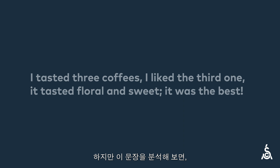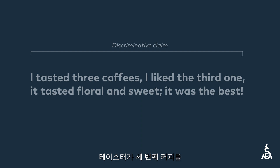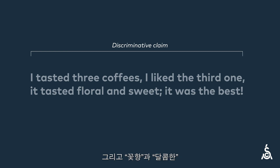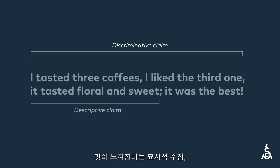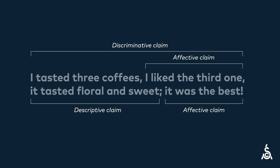If you analyze the sentence, however, you can see it contains all three kinds of information: a discriminative claim that the taster can distinguish the third coffee from the others, a descriptive claim that it tastes floral and sweet, and two affective claims — one about liking and one about quality.